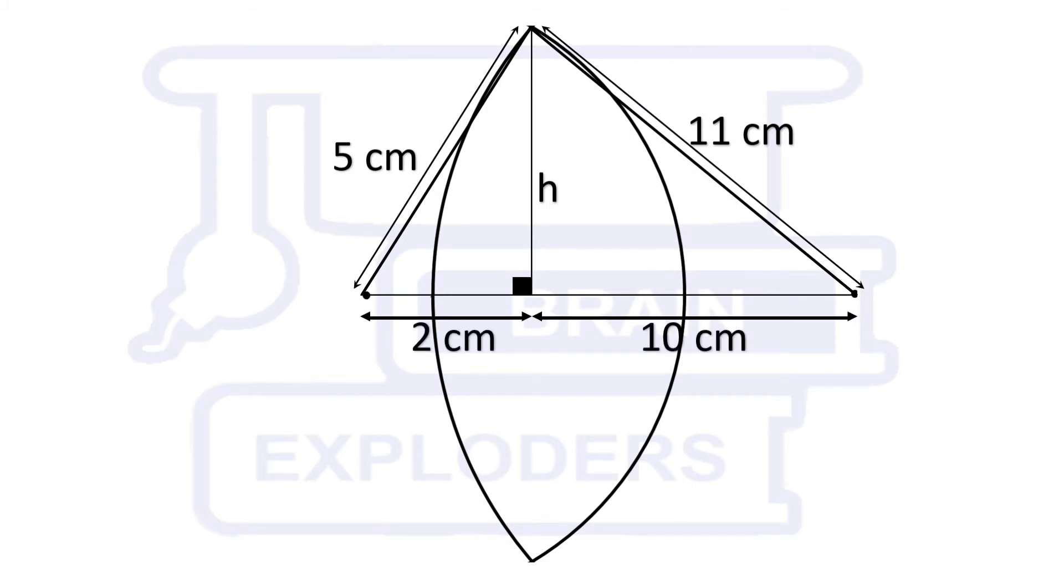We have already calculated the length of those line segments on the base which are outside the shape. With the help of this information, we can calculate the width of both the spherical caps separately.